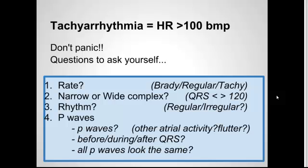Lastly, look at the P waves. Questions to ask yourself about the P waves: first, are there P waves, or do you see some other kind of atrial activity such as flutter? Next, look at the P wave in relation to the QRS — does it come before, after, or during? Does it seem to be related at all? And lastly, compare the P waves across your rhythm strip: do they all look the same, or is there some variation?